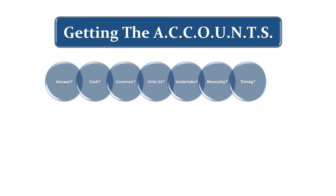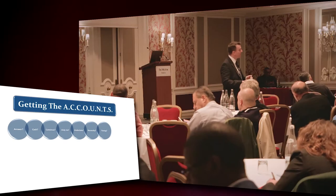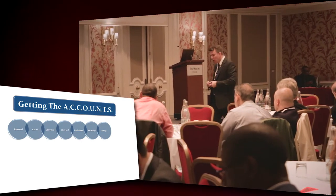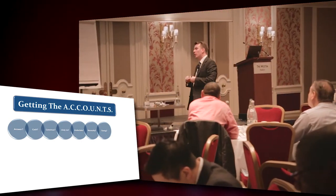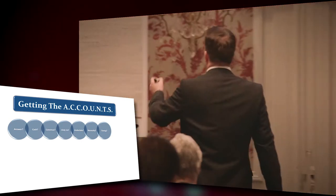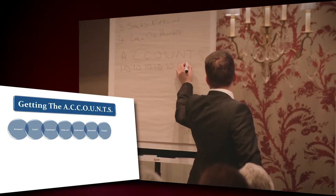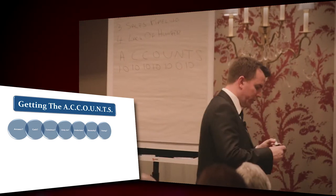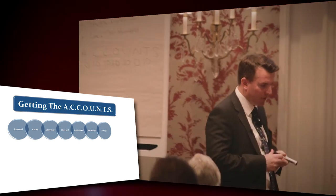T is for Timing. Do we have the timing of the next meeting with them in the diary? This is where most of your zeros will appear. Do you have a meeting set up with them? If you do have a meeting — not email, not phone call, not Skype — if you do have a meeting with them, score it a 10. If you do not, score it a zero.